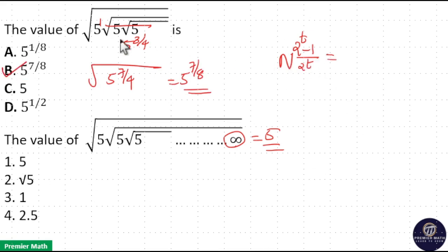If you use this formula, n = 5 and 2^t means t equals total number of square roots. Here there are total 3 square roots. So 2^3 - 1 divided by 2^3, which equals 8 - 1 is 7. So 5^(7/8).